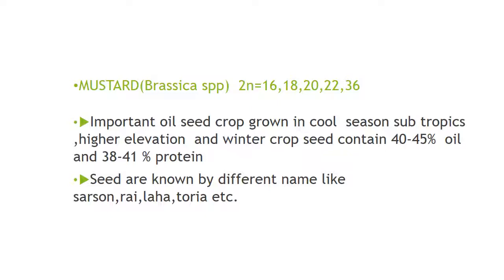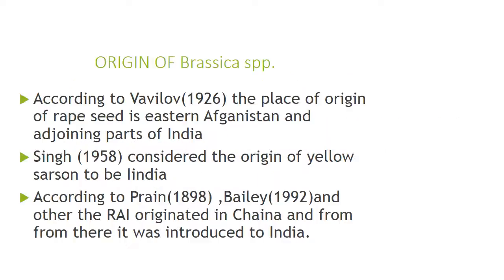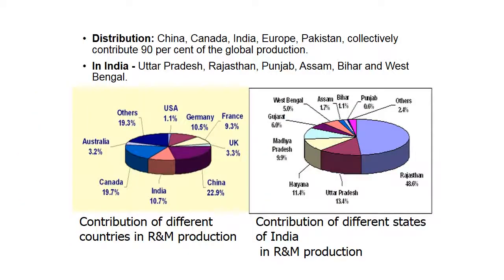Regarding origin in more detail: according to Vavilov in 1926, the place of origin of rapeseed is eastern Afghanistan and adjoining parts of India. According to Singh in 1958, the origin of yellow sarson is considered to be India. According to Prain in 1898, rye originated in China and from there it was introduced to India.